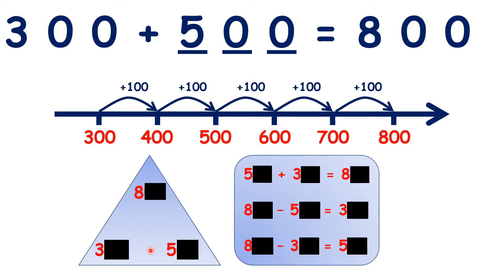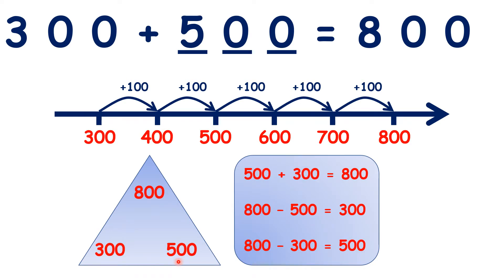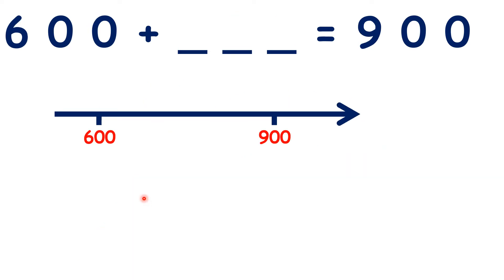We can see how these facts relate to the number facts we already know. All that is different is that rather than 3, 5, and 8, we have 300, 500, and 800. Now pause the video and work out what you have to add to 600 to get 900.